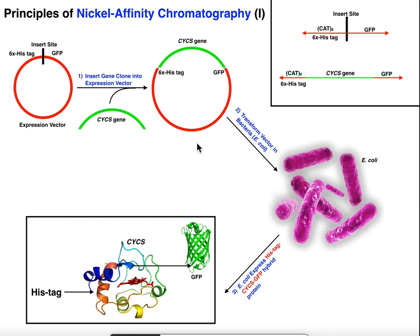Let's talk about how you actually get a 6x histag onto a protein. It's actually a pretty complicated process, and in most course biochemistry labs you would not actually do this — it would probably already be done. What you generally have to do is isolate the gene of interest.